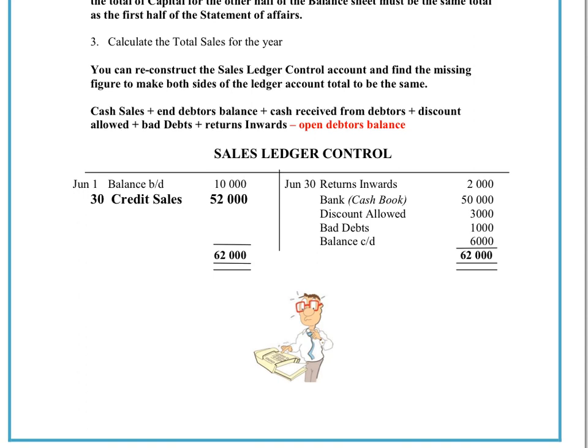The third method for finding missing or incomplete information is to use the sales ledger control account. The sales ledger is where you keep all your debtors, so another way of describing the sales ledger control account would be a total debtors account. The easiest way to think of it is as a giant T-account for all our debtors. At the beginning of the month, if we knew that we had $10,000 worth of debts owed to us, that would be shown as an asset on the debit side.